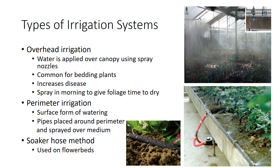Perimeter irrigation is a surface form of watering. Pipes are placed around the perimeter of the flower bed with nozzles located below the foliage, and they deliver a flat spray of water over the growing medium, ensuring that cut flowers and foliage do not get wet. The soaker hose method for watering plants is a surface form of irrigation commonly used on flower beds. This method uses a series of hoses that are placed on the surface of the flower bed, and water oozes or drips out of the line.